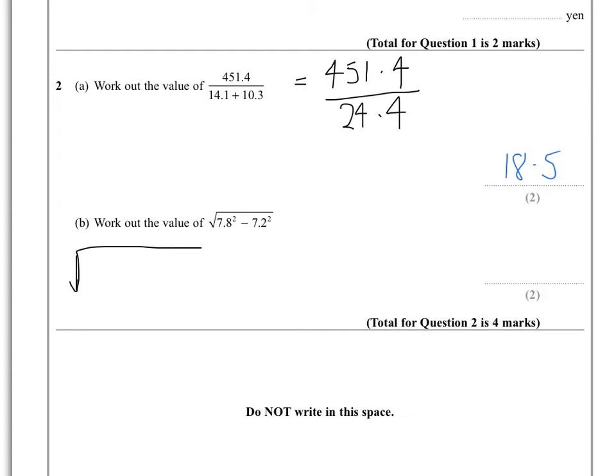So we end up with 7.8 squared is 60.84, minus 7.2 squared which is 51.84. That gives us the square root of essentially 9, and the square root of 9 is 3.